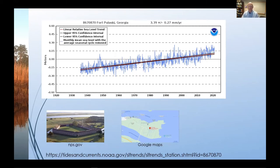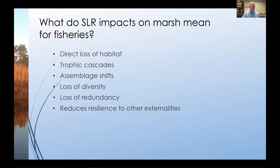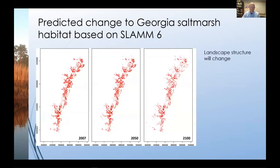What are those potential impacts on the nekton community? Various authors have suggested that sea level rise can lead to a direct loss of habitat, trophic cascades as some species respond to those changes more than others, shifts in assemblage, loss of diversity, and as in other systems around the world these changes can result in a loss of redundancy leading to reduced resilience to other externalities. As a spatial ecology lab here at UTA we're particularly interested in how the distribution and abundance of species are likely to change relative to landscape pattern.